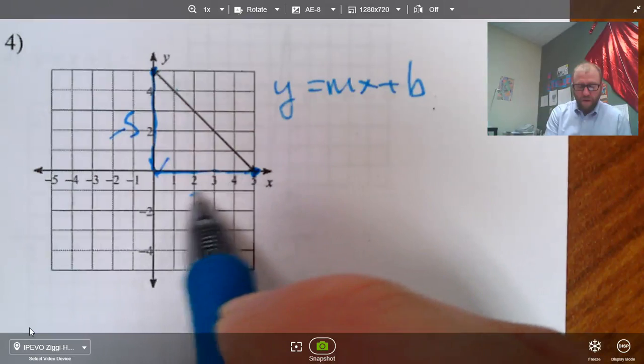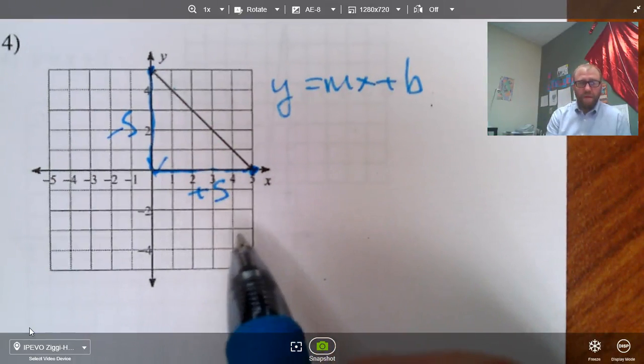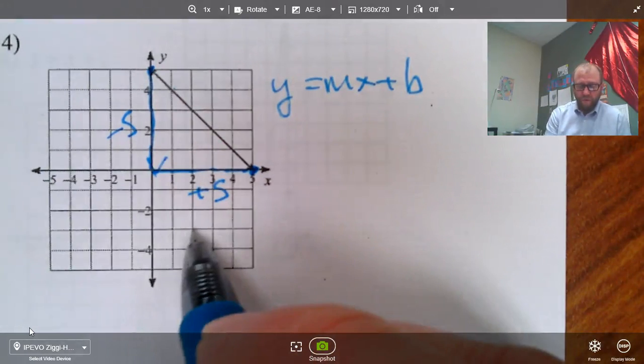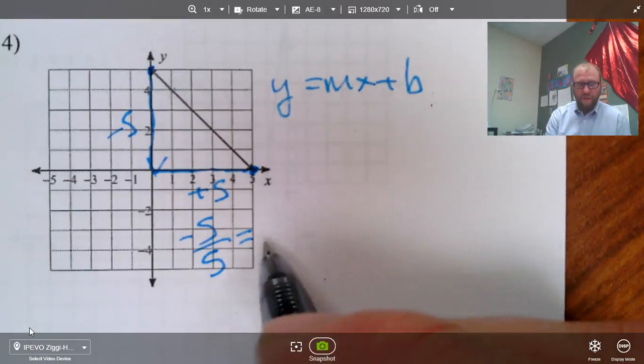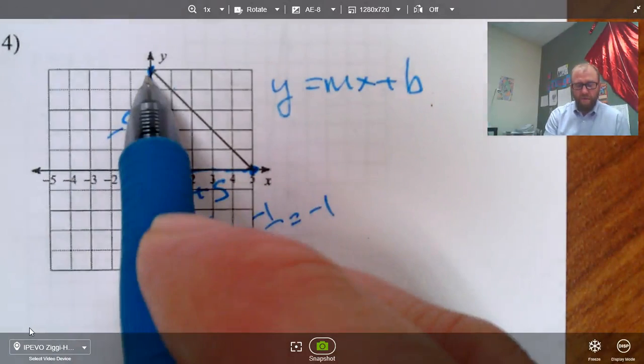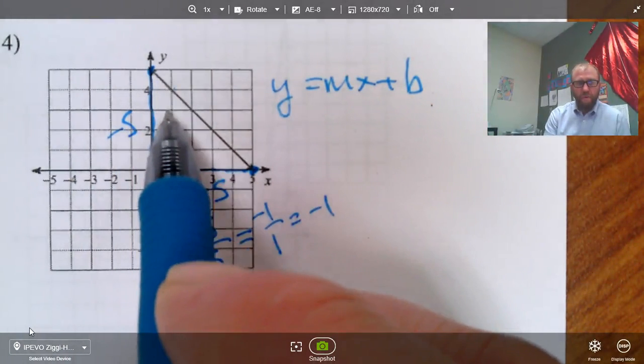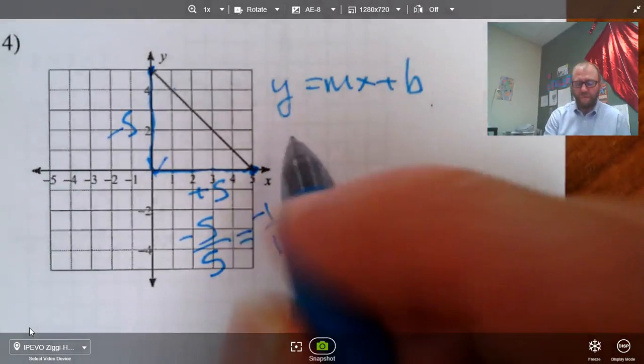Forward, one, two, three, four, five. Let's see. So this means our slope is negative five over five, but that reduces to simply negative one over one or negative one. Notice we could have gone negative one over one, negative one over one, negative one over one. So it looks like the same in the end.